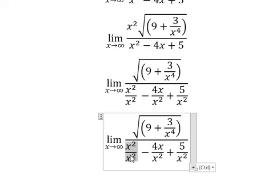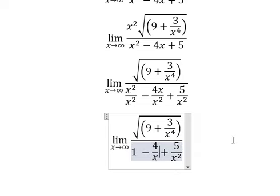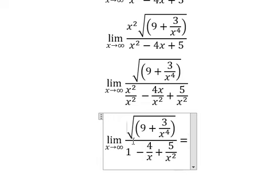This one we have 1, this one we have 4 over x. When x approaches positive infinity, 3 divided by positive infinity, you get 0. This one 0 and 0, and now we have the final answer.